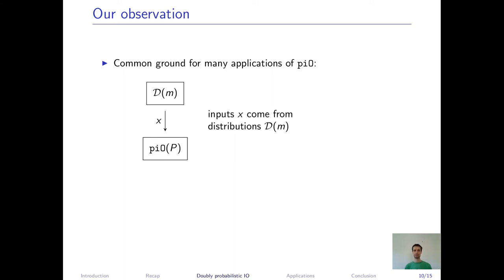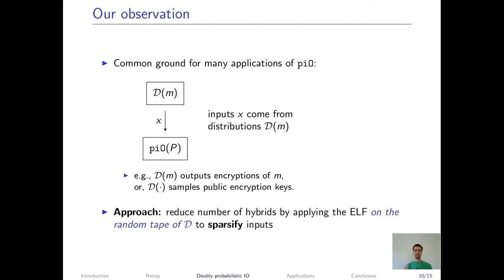Instead, we follow a very different approach. Namely, we observe that many P.I.O. applications share a common ground in how they use P.I.O. obfuscated programs. Namely, in many applications, P.I.O. obfuscations are only fed with inputs X which are sampled according to some application-dependent distribution. Let's call them D of M here. D of M could, for example, be a distribution of a ciphertext of some given message M, or it could be just a distribution of public key encryption keys.